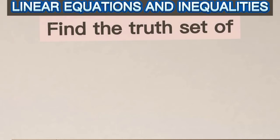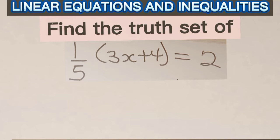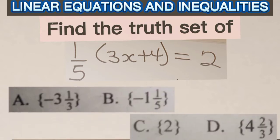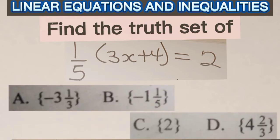Find the truth set of one-fifth of 3x plus 4 which is equal to 2. Now which of the options given is correct? Is it A, B, C, or D? Let's solve together and then indicate the correct answer.